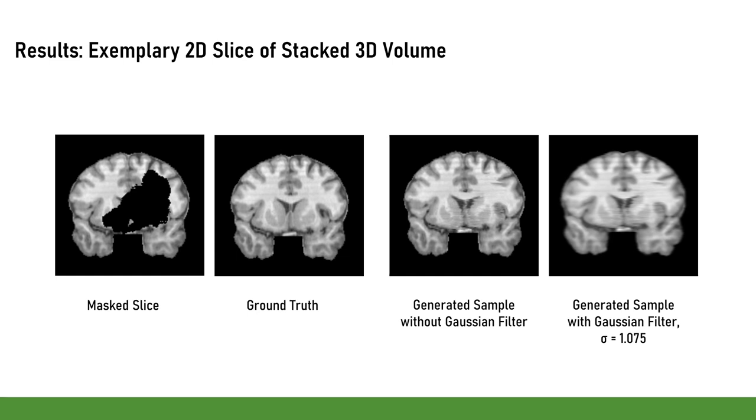Our model is trained to generate transversal slices. If we stack the generated slices to a 3D volume, we can have a look at an exemplary coronal slice. Our generated sample shows some stripe artifacts due to the stacking of the transversal slices.